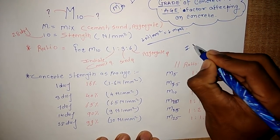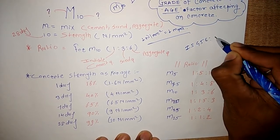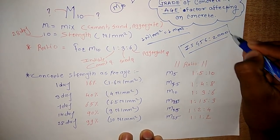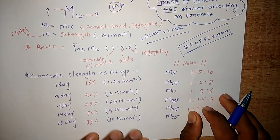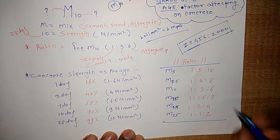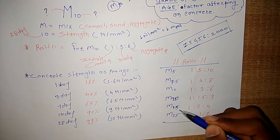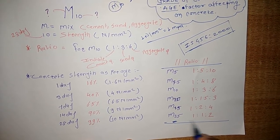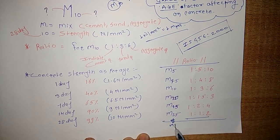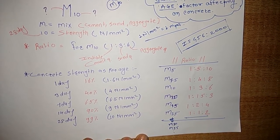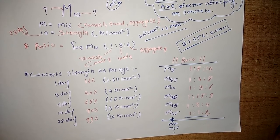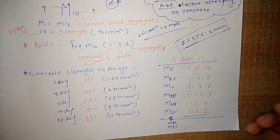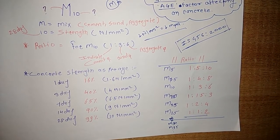These grades are given in IS 456:2000 — not by individuals but by Indian Standards. The grades listed in IS 456:2000 are M5, M7.5, M10, M15, M20, and M25. Beyond M25, grades like M30 and M35 are also available but are not specified in the standard books. For high-rise building columns or mass concrete requiring 30 MPa strength at 28 days, M30 and M35 grade concrete is used.